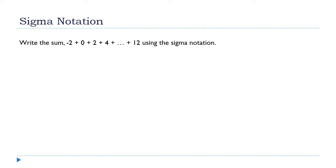Now let's go the other way — starting with a sum and converting it into sigma notation. As I look at this expression, I see all even numbers. Don't be thrown off by that minus sign — I'm not going to use the (-1)^n alternating trick, because the signs aren't alternating. It's just starting at a negative number and going up to a positive, and so on.